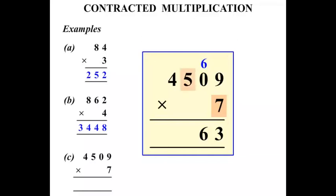7 times 5 is 35. So we put the 5 down and carry the 3. 7 times 4 is 28. Plus 3 more is 31. And there's no further calculation so let's write the 31 there. So our answer there is 31,563.